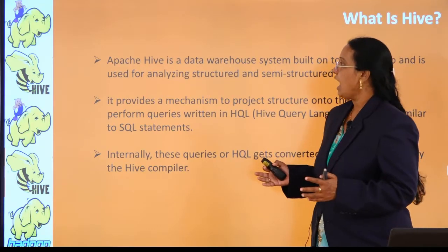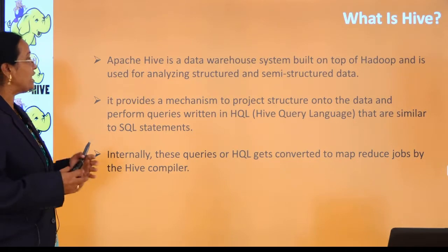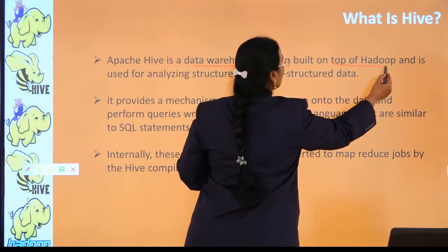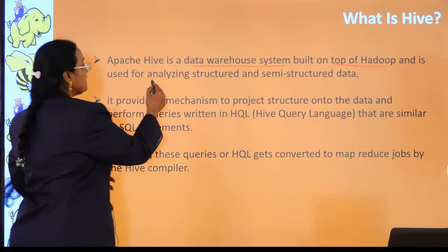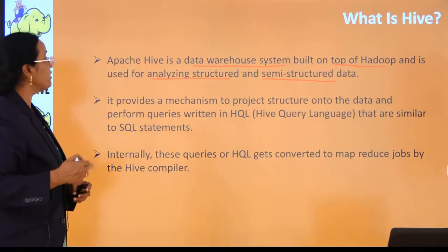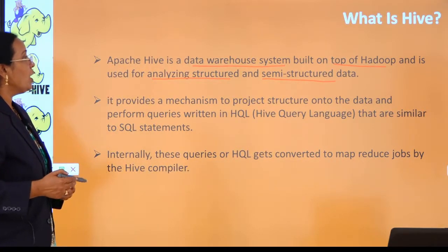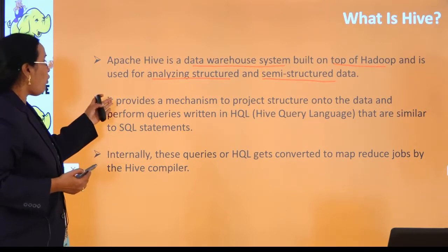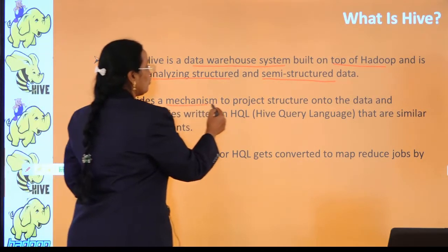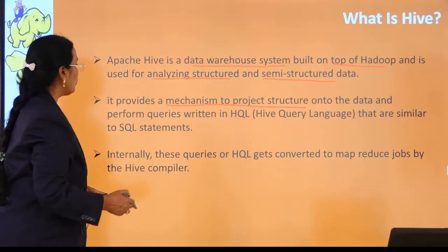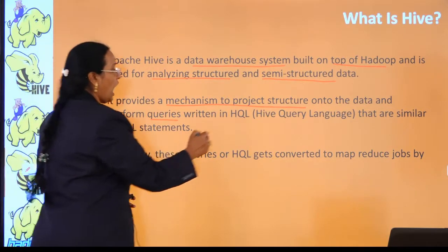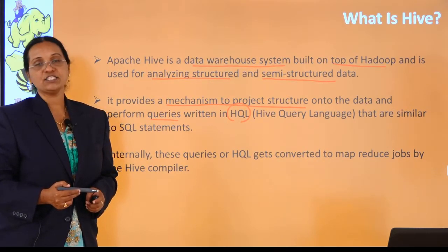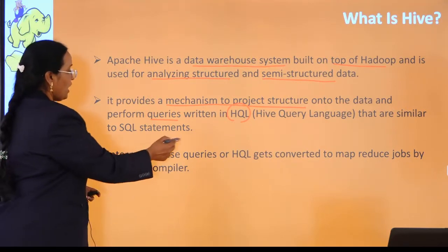What is Hive? Apache Hive is a data warehouse system built on top of Hadoop. It is used for analyzing structured and semi-structured data. What it provides is a mechanism to project structure onto the data so that you can perform queries using the Hive Query Language, which is very important. Just as you have SQL, in the same manner we have HQL — that is, the Hive Query Language — which is similar to SQL statements.